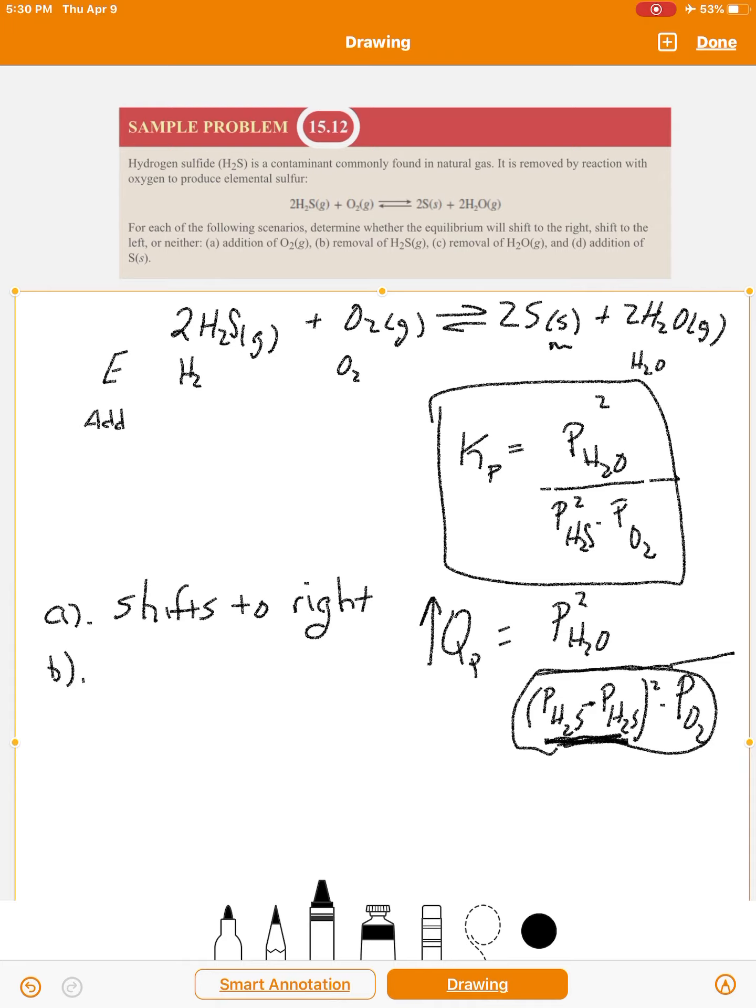Right, if you make this number here smaller because you're taking some of it away, that means the denominator itself is going to be smaller. And if the denominator gets smaller, you're dividing by a smaller number, so that means it goes up. The ratio goes up, so that means that Q is now greater than K. If Q is greater than K, the reaction goes that way.